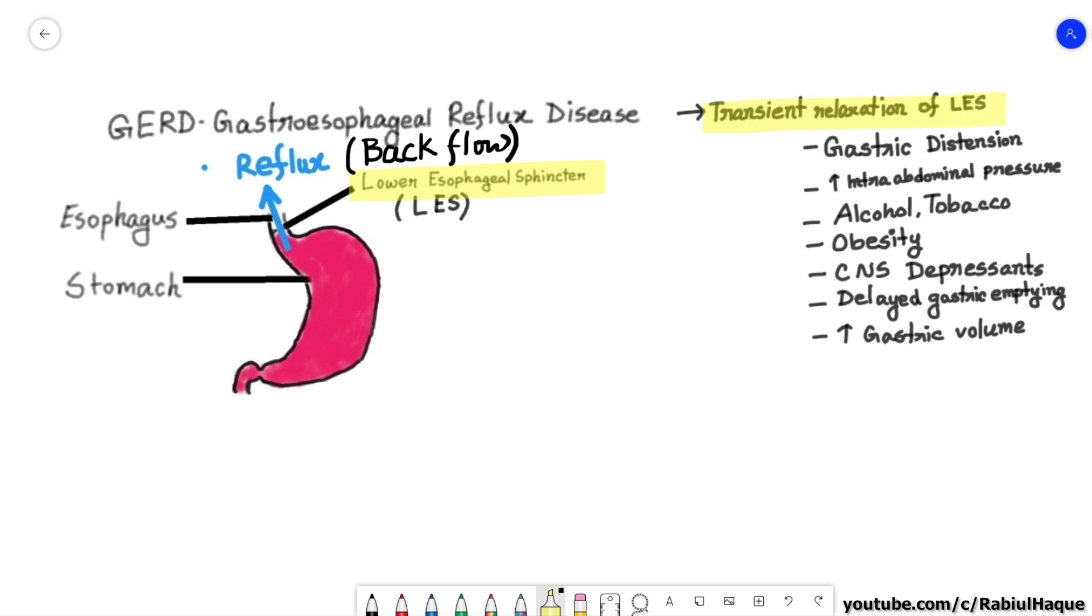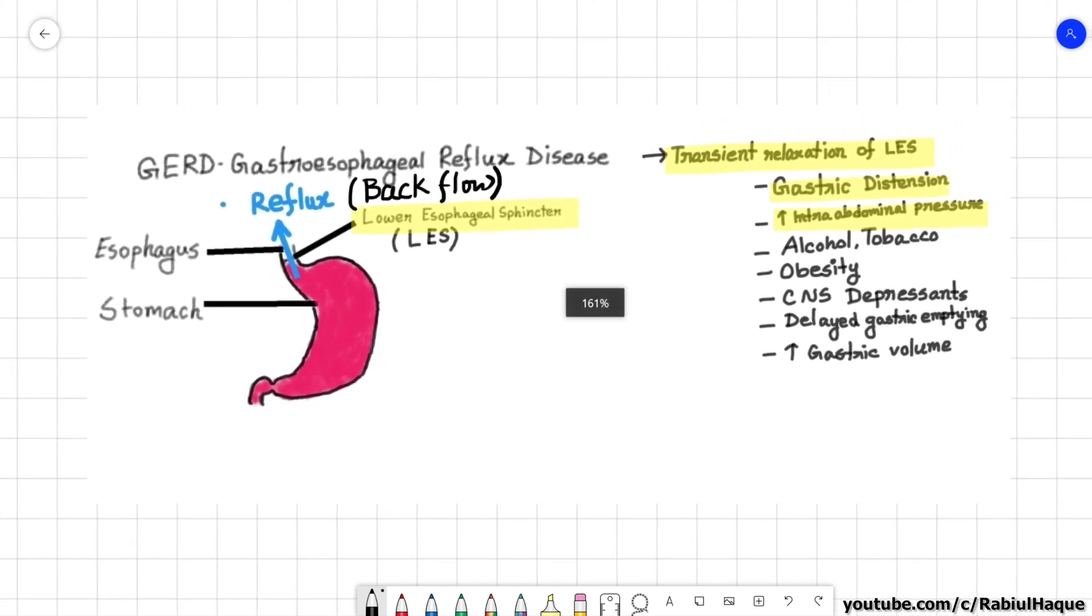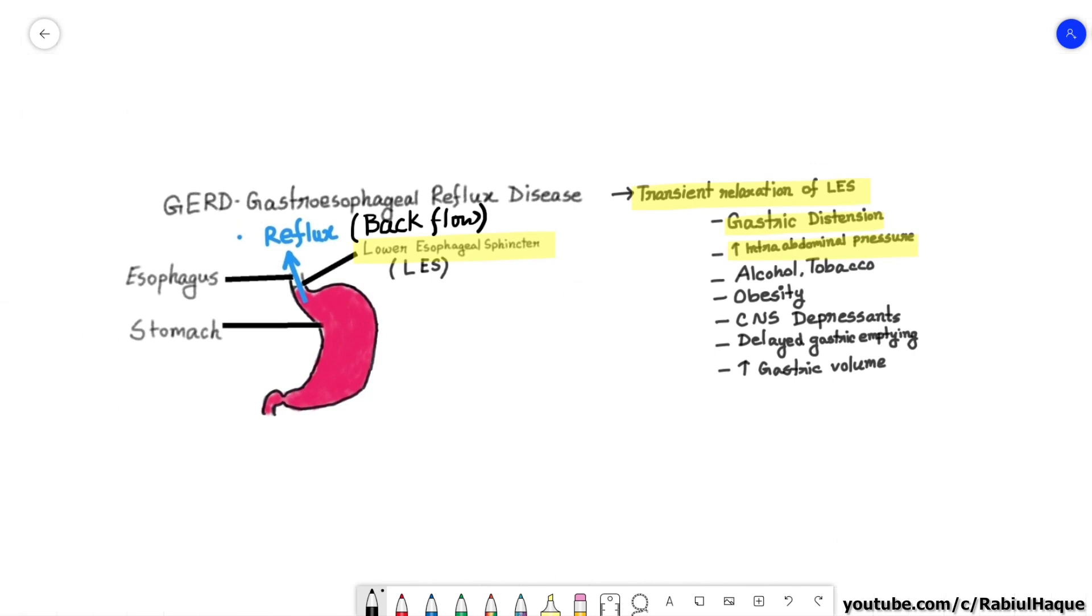And why is there transient relaxation? These relaxations are thought to be mediated via vagal pathways and they can be triggered by gastric distension. Now gastroesophageal reflux disease can also occur after sudden increase in intra-abdominal pressure, for example after coughing, straining, or bending. And some other conditions are also associated with gastroesophageal reflux disease and they include alcohol, tobacco use, obesity, central nervous system depressants, pregnancy, delayed gastric emptying, and increased gastric volume. So all these things can lead to reflux.